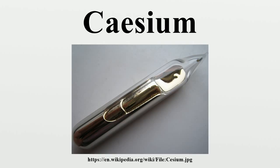Cesium hydroxide is hygroscopic and a very strong base. It rapidly etches the surface of semiconductors such as silicon. CsOH has been previously regarded by chemists as the strongest base, reflecting the relatively weak attraction between the large Cs+ ion and O-. It is indeed the strongest Arrhenius base, but a number of compounds that cannot exist in aqueous solution, such as n-butyllithium and sodium amide, are more basic.